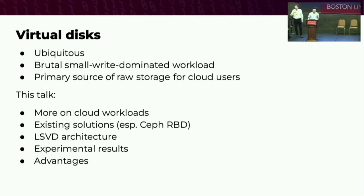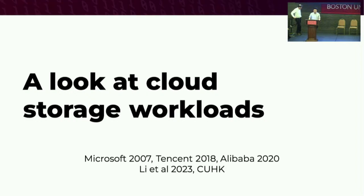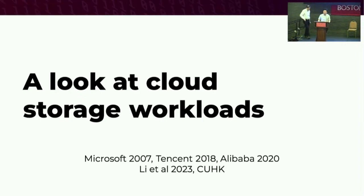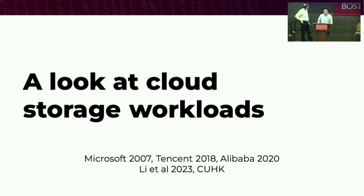What we've been building is a virtual disk for use in modern data centers and cloud workloads. In order to build a virtual disk ready for these workloads, we need to look at what cloud storage workloads actually are. This involves trace analysis of traces people have released. The surprising thing is there is a surprising lack of high-quality traces out there. The most recent paper from 2023 analyzed a trace released by Alibaba from 2020, which turns out to be the most recent high-quality trace available of about a thousand disks. We also have a Tencent trace from 2018 and a trace from 2007 of Microsoft Research Cloud.